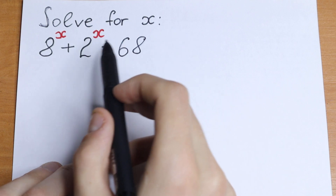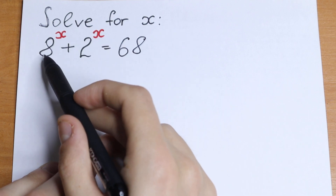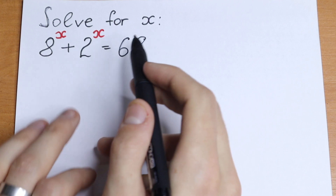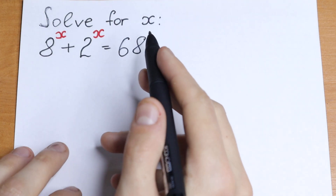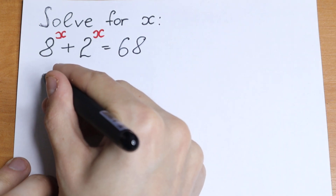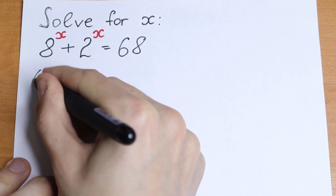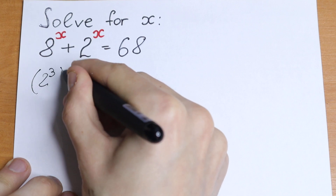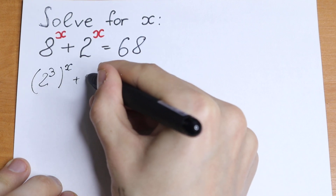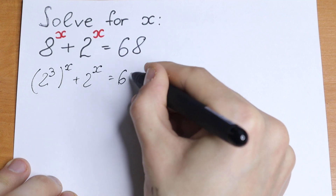We have 2 to the power x right here, and we have 8. So we can write this 8 as 2 cubed. As a result we will have the same basis. So let's do this at the beginning. We will have 2 cubed to the power x, plus 2 to the power x, equal to 68.